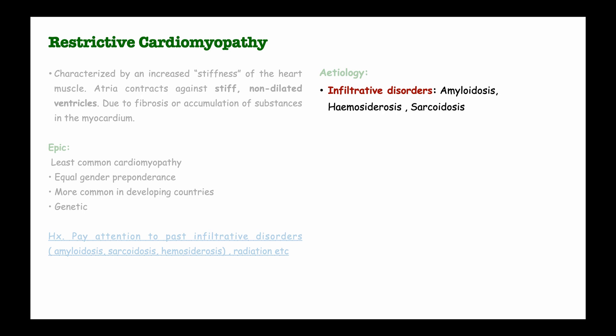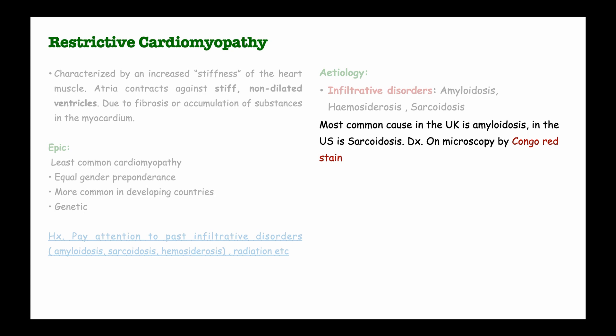If the heart muscle is infiltrated with amyloid plaques, we find this on histology. In hemosiderosis, we may find large amounts of iron deposits in the heart muscles. We may also find infiltration with granulomas in sarcoidosis. The most common infiltrative disorder in the UK is amyloidosis, and in the US it is sarcoidosis. Amyloid plaques can be diagnosed on microscopy using the Congo red stain.